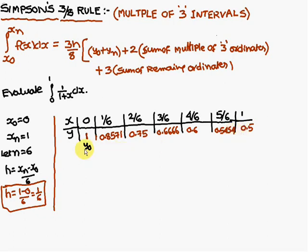Now, we have to name these y values. The first one is y0, second one is y1, this is y2, y3, y4, y5, y6.